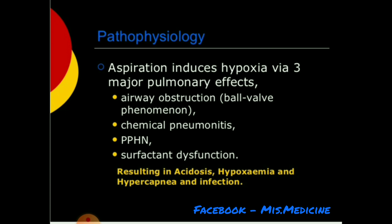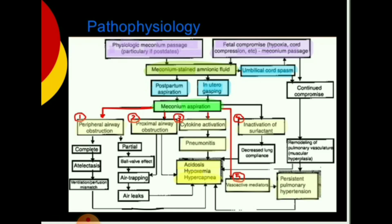Pathophysiology of MAS: Aspiration induces hypoxia via three major pulmonary effects — airway obstruction (ball valve phenomenon), chemical pneumonitis, PPHN, and surfactant dysfunction. It results in acidosis, hypoxemia, hypercapnia, and infection. The mechanism begins with post-dates or fetal compromise due to hypoxia and cord compression.